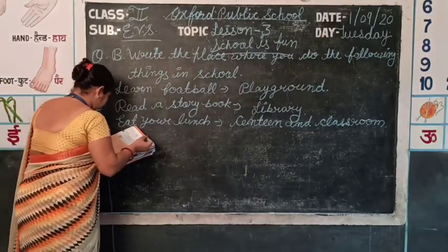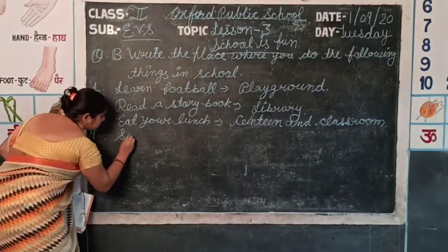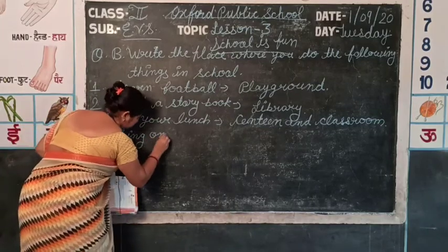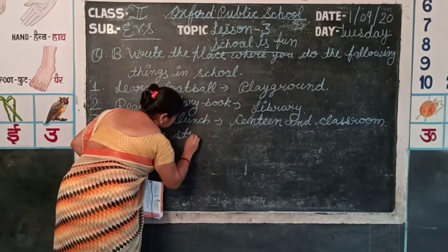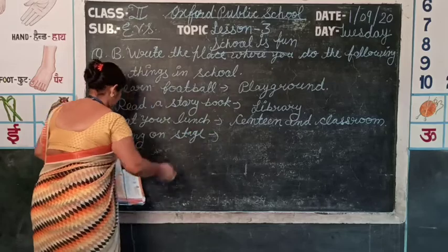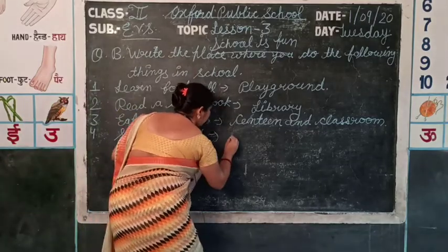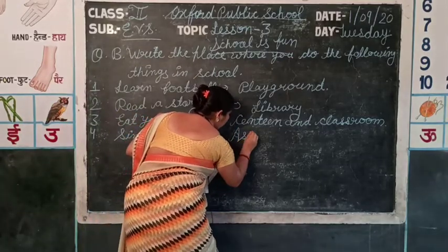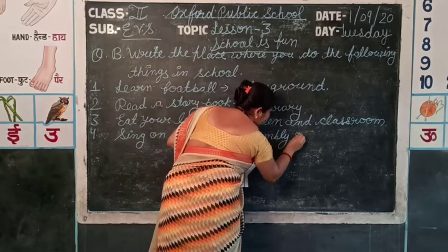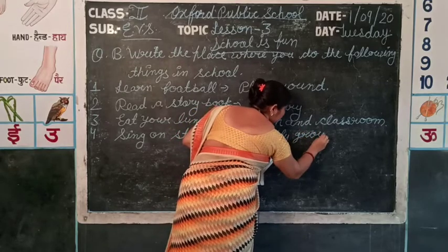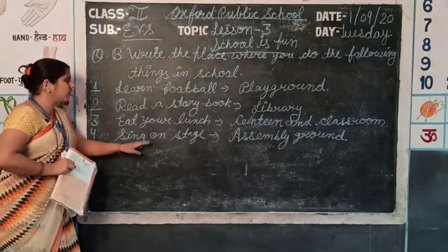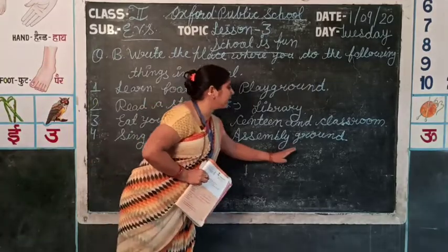Four is: sing on stage. The answer is — sing on stage: assembly ground.